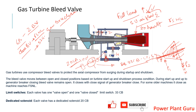To summarize: bleed valves are required to handle excess compressor air during startup and low-load conditions. The number of bleed valves may vary. They remain open during startup and close when the generator breaker closes. Similarly, during load reduction and shutdown, once the breaker opens, the bleed valve opens again and remains open while the machine shuts down.